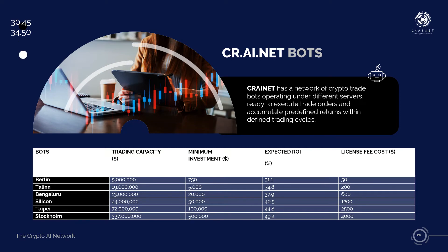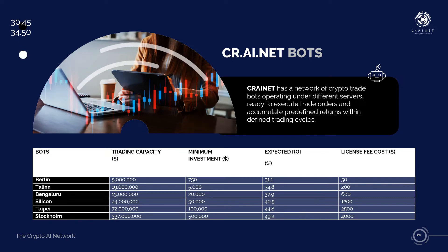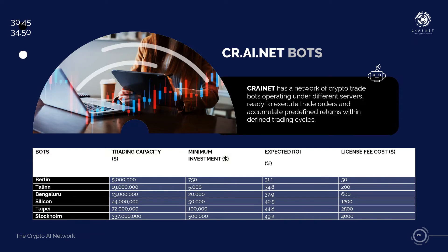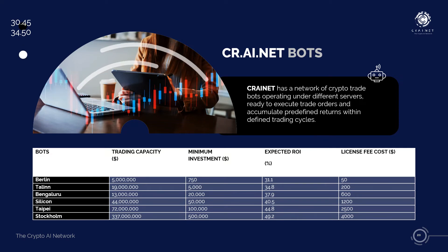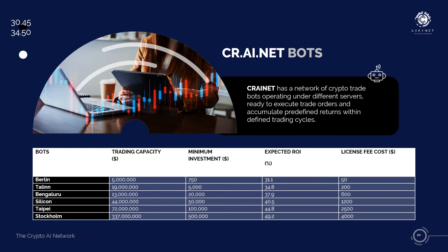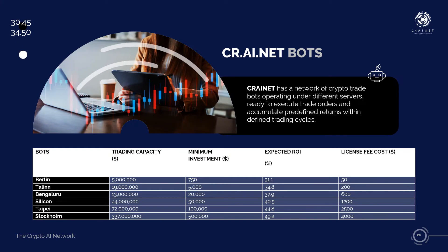The Taipei bot can trade a total of $7 million and requires each subscriber to subscribe with a minimum of $100,000. The expected ROI while using this bot is 44.8% bi-weekly, and the license costs $2,500 annually. The Stockholm bot can trade a total of $337 million and requires each subscriber to subscribe with a minimum of $3,500,000. The expected ROI while using this bot is 49.2% bi-weekly, with the license costing $4,000 annually.